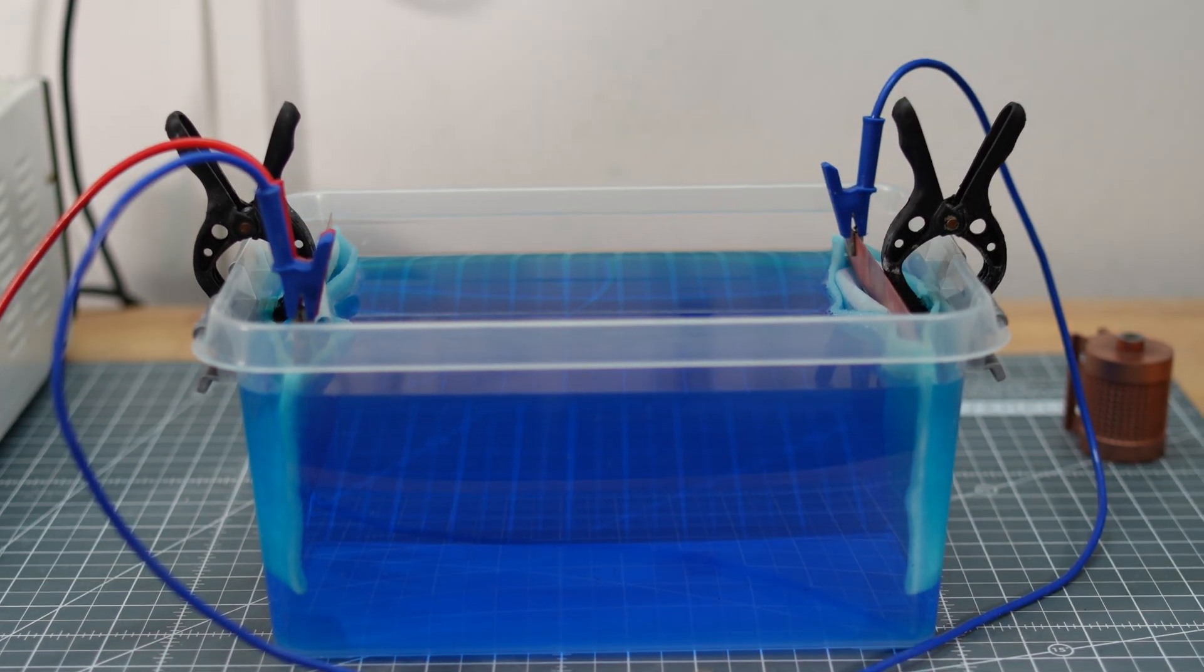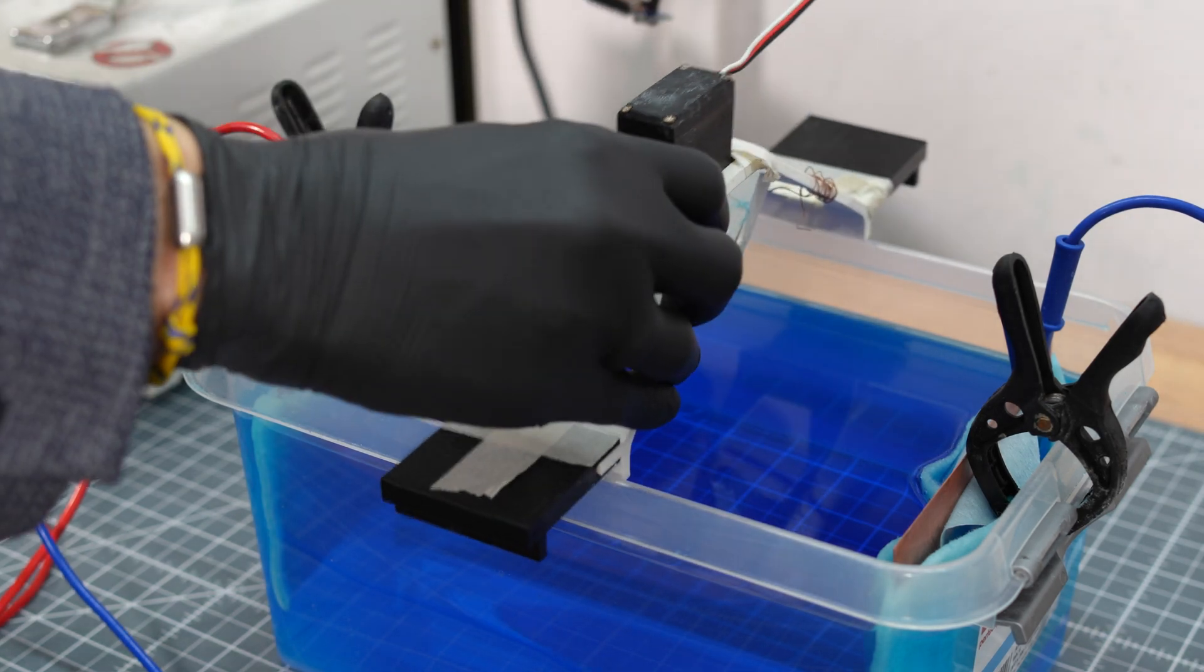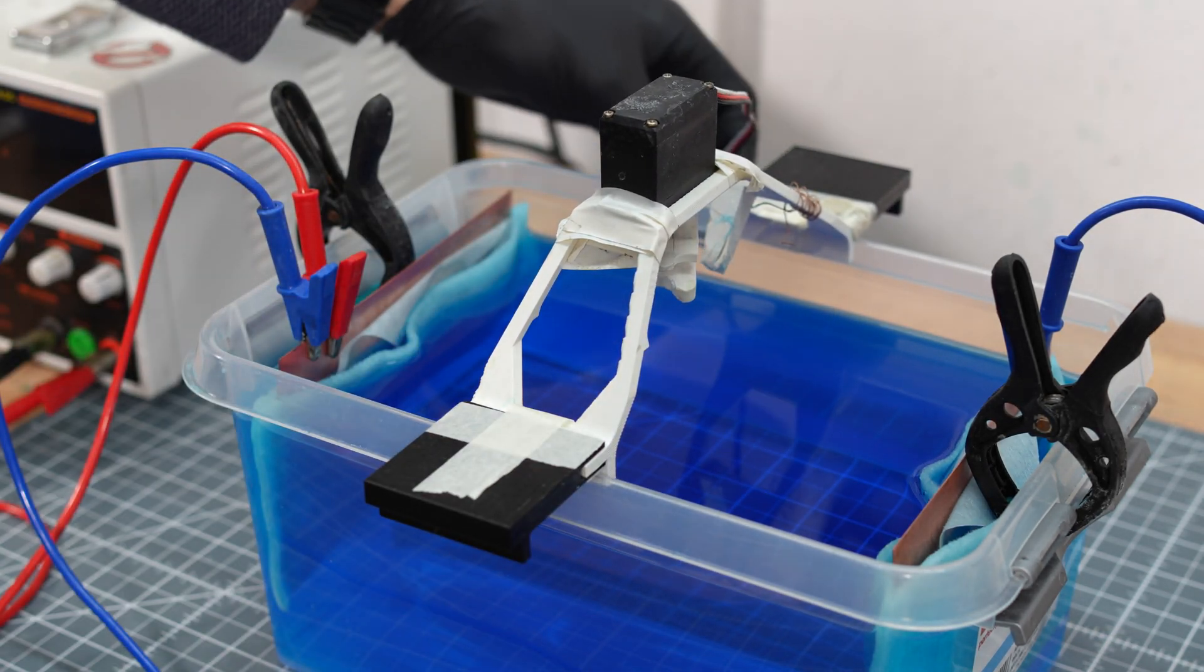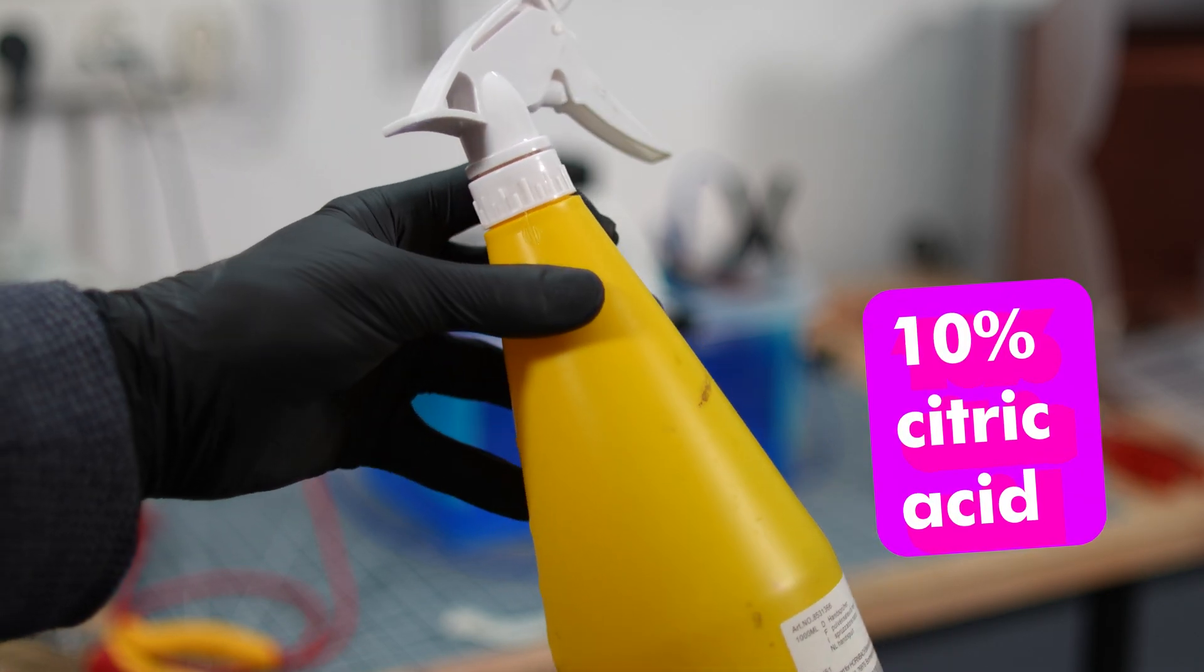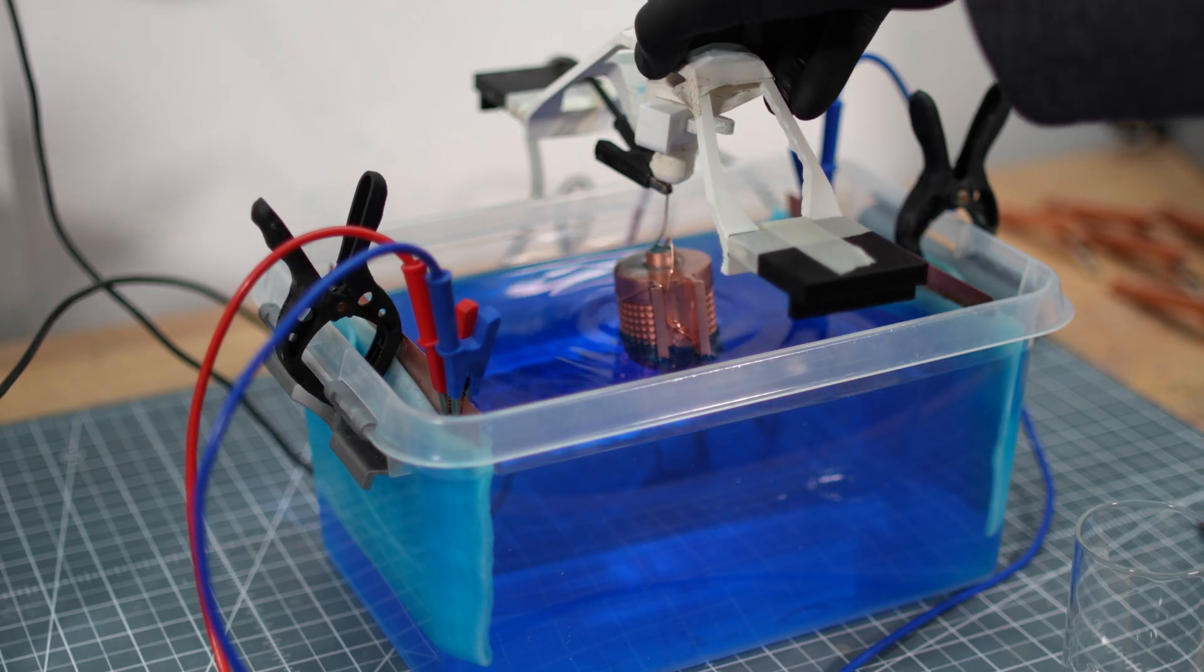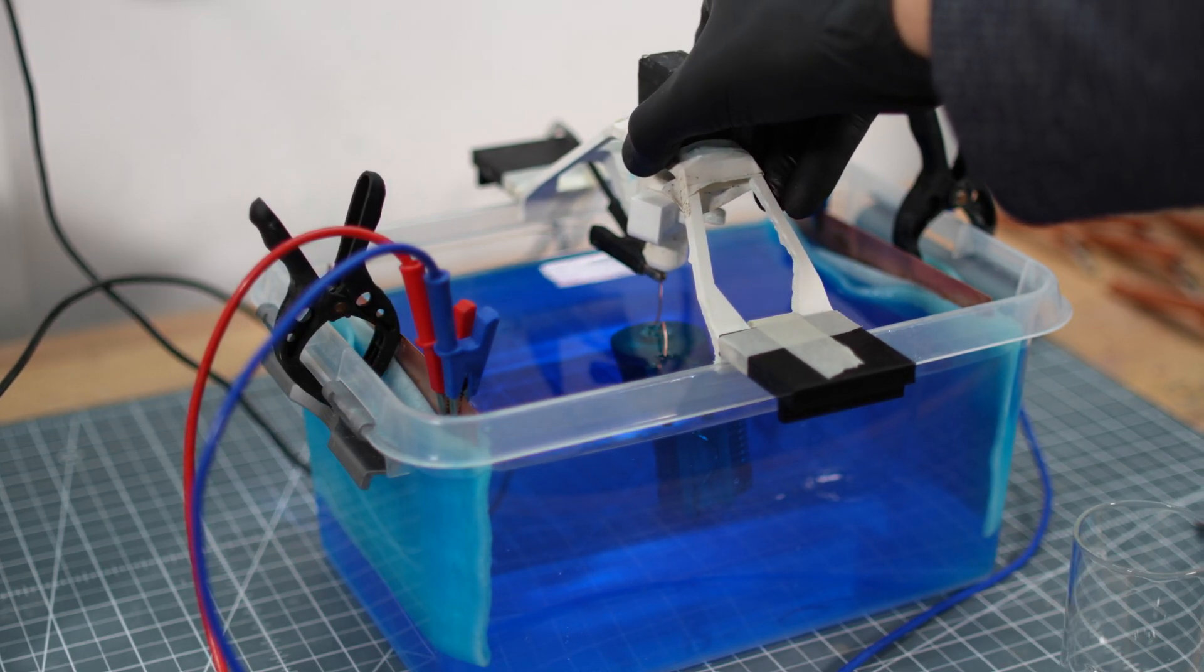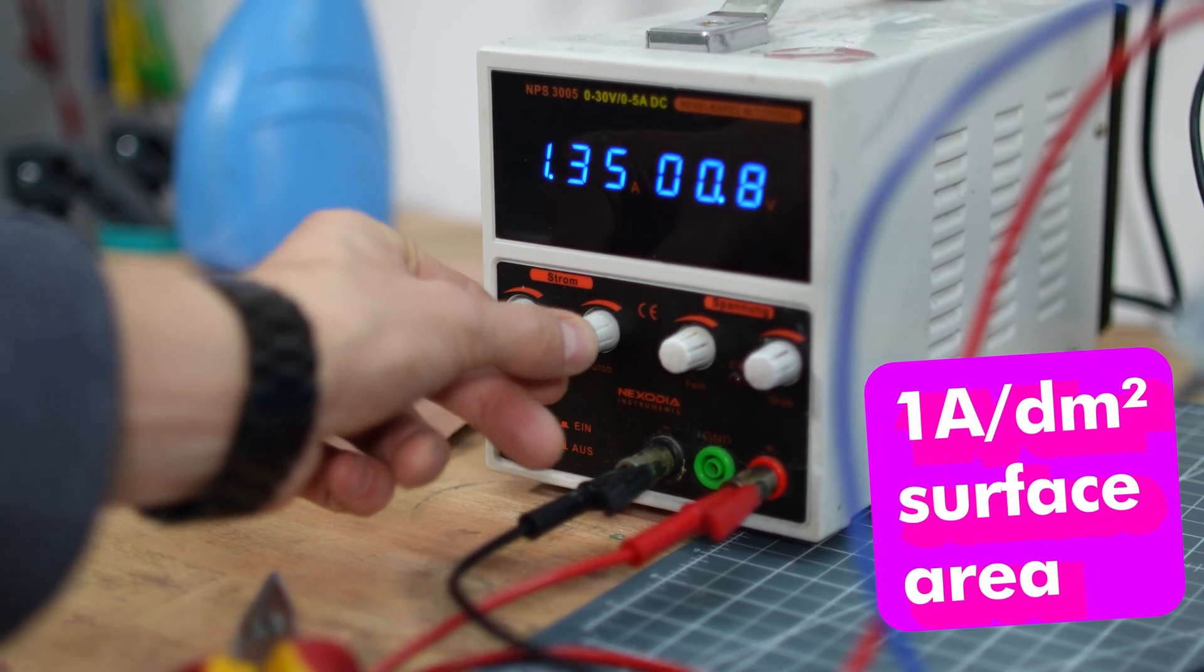The conductive object goes in the middle. If you want, you can use the rotary jig to make it evenly coated and avoid anode shadows. Now decap the 3D printed part with a 10% citric acid solution, rinse it with distilled water and hang it in the center of the bath connected to the negative pole. Adjust the current to the correct amperage and wait for about 4 hours.